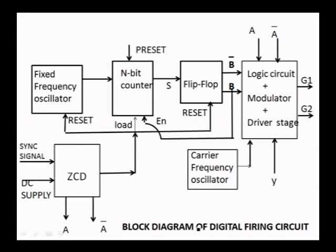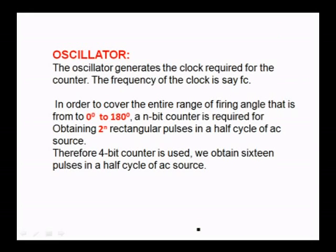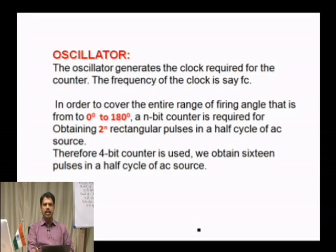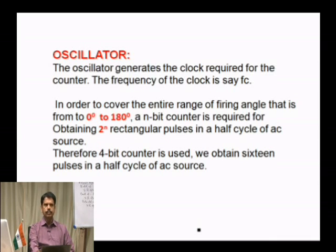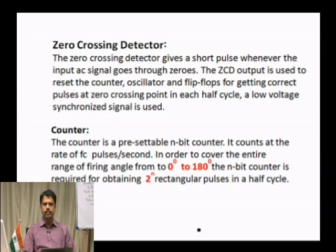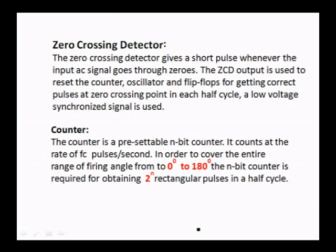The zero crossing detector gives output whenever the input signal passes through zero. The oscillator generates a clock required for the counter with frequency FC. To cover the entire range of firing angle from 0 to 180 degrees, an n-bit counter is required to obtain 2 to the power of n rectangular pulses in a half cycle of the AC source. A 4-bit counter is used, giving 16 pulses in a half cycle. The ZCD output is used to reset the counter and the flip-flops to get the correct pulse at the zero crossing point in each half cycle.